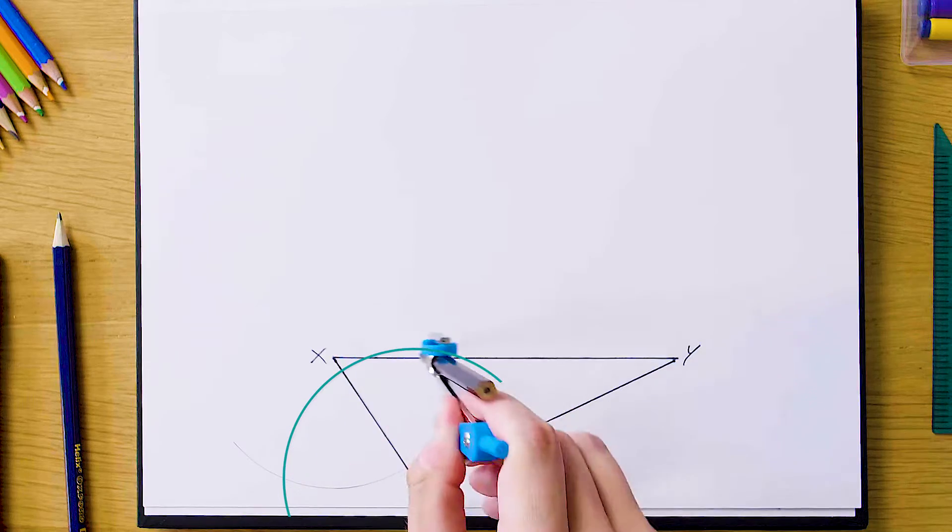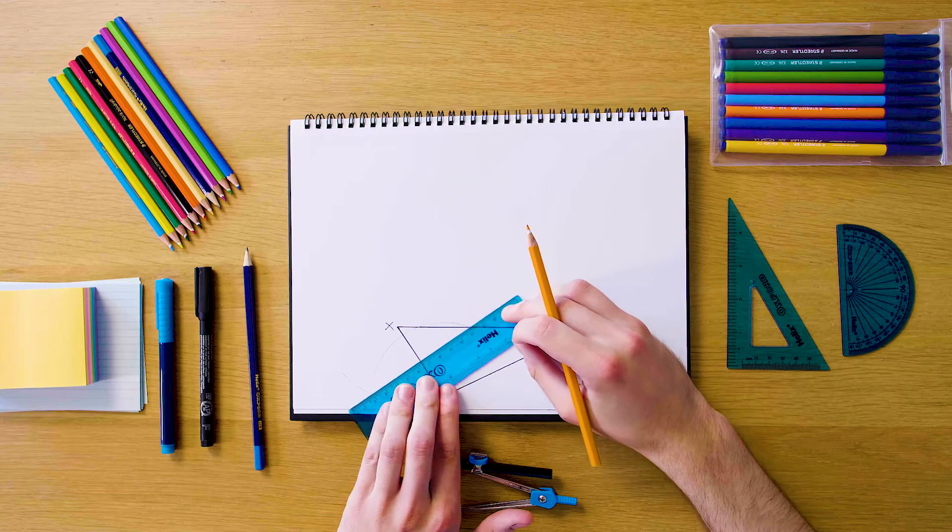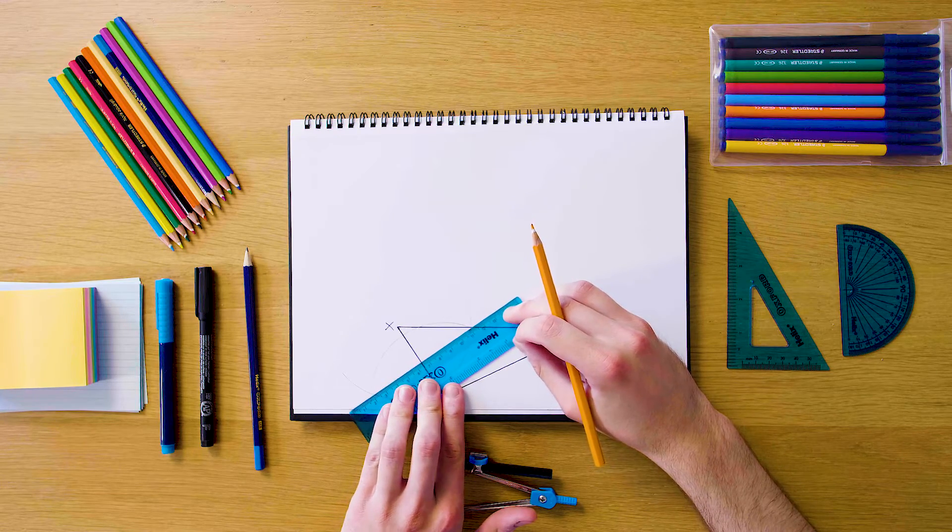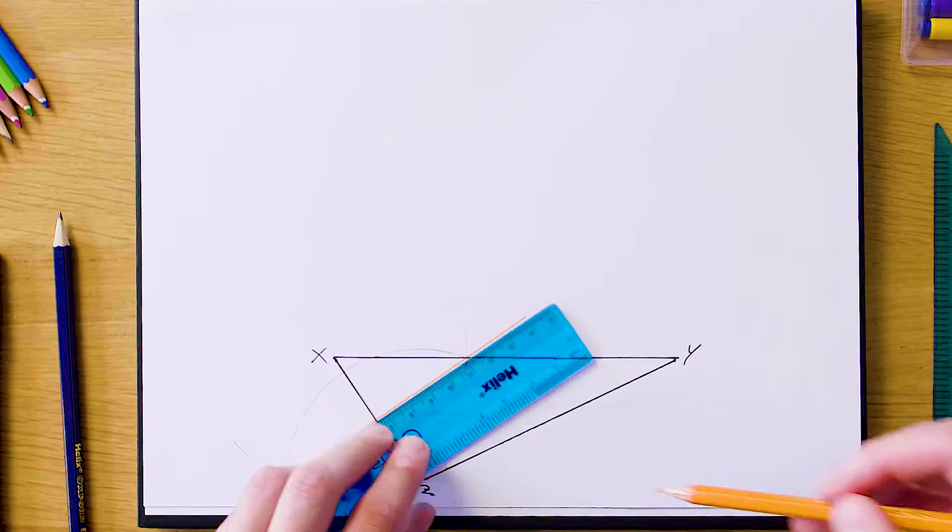And it's going to look like this. And now we're just going to grab our ruler and make sure to join our vertices so that we actually find the bisector of this line. So we're just going to join them like this. And that's our bisector for our first line.